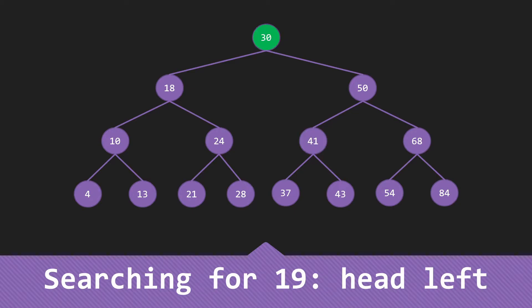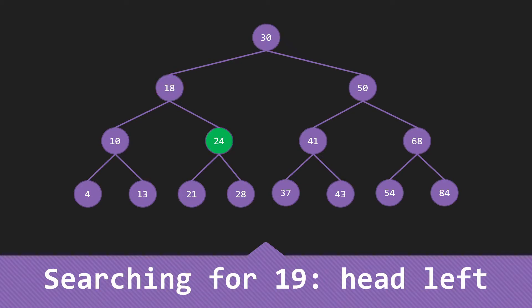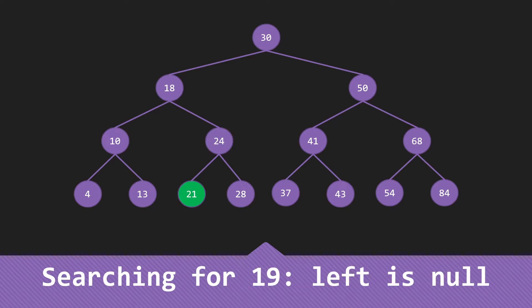Another example: searching for 19. 19 is smaller than 30, so I need to go left. It's larger than 18, so I head right. Smaller than 24, so I head left. Smaller than 21, so I head left — but that is a null, so now I know that 19 is not, in fact, in the tree. That's the basic operation for searching in a binary search tree.